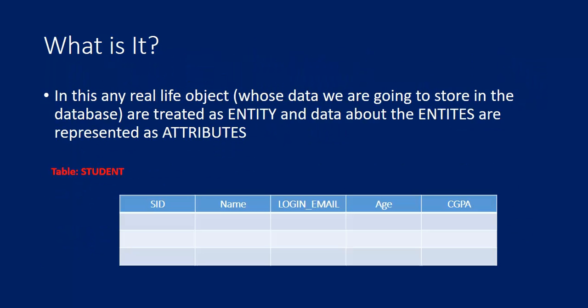What is an entity? Any real-life object whose data we are going to store in the database is treated as an entity. Student is a real-life object, so we treat student as an entity. Similarly, course, department, and faculty are real-world things we are going to store data about — these are called entities. Data about entities are represented as attributes. For example, the student table has attributes: student ID, name, login or email, and CGPA.